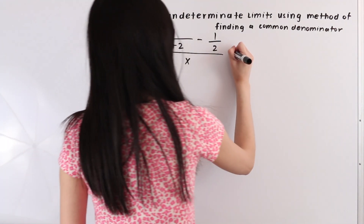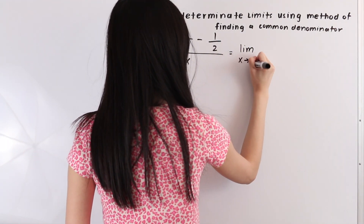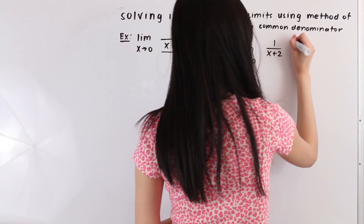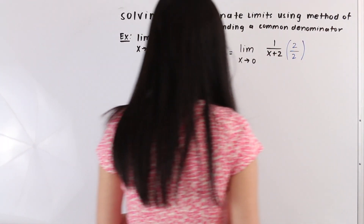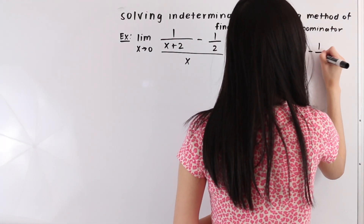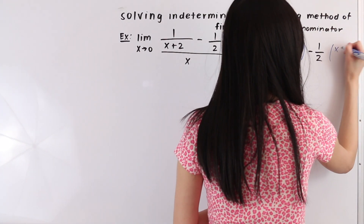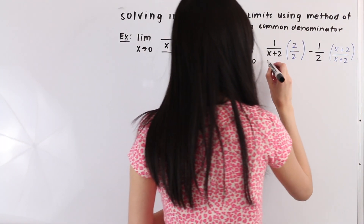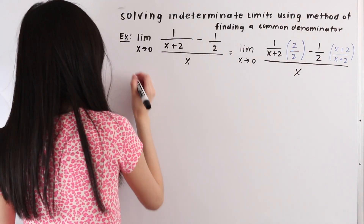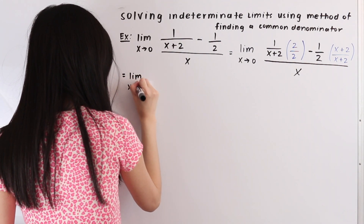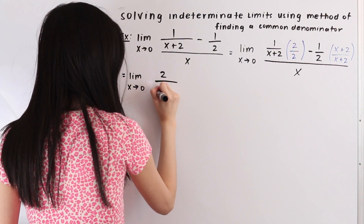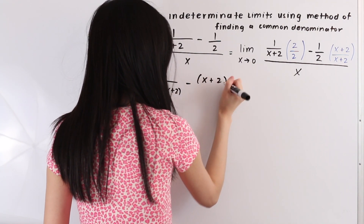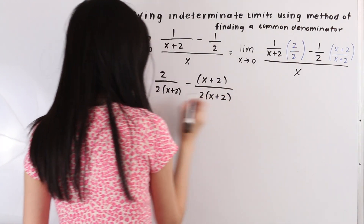So we have the limit as x approaches 0 of 1 over x plus 2, and we're going to multiply this by 2 over 2. And this is minus 1 half, and we're going to multiply this term by x plus 2 over x plus 2. And this is all over x. Now let's multiply this out. So we have the limit as x approaches 0 of 2 over 2 times x plus 2, minus x plus 2 over 2 times x plus 2. And this is all over x.